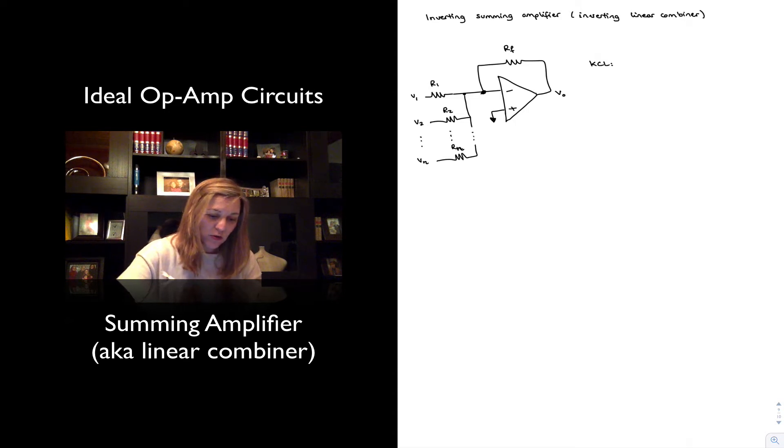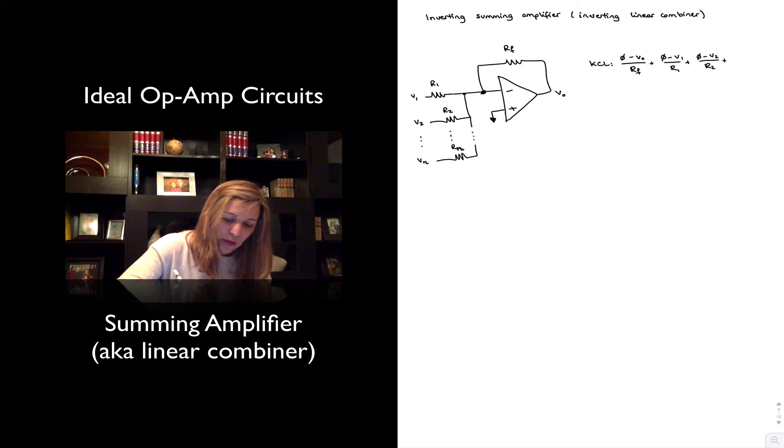The sum of those currents will just be zero minus Vout divided by RF plus zero minus V1 divided by R1 plus zero minus V2 divided by R2 plus dot dot dot, plus zero minus VN divided by RN, all that is equal to zero.